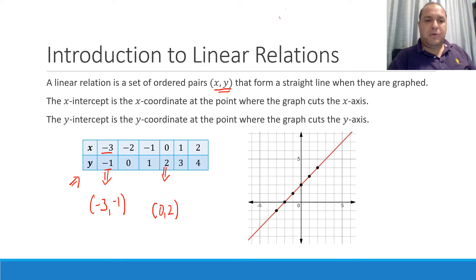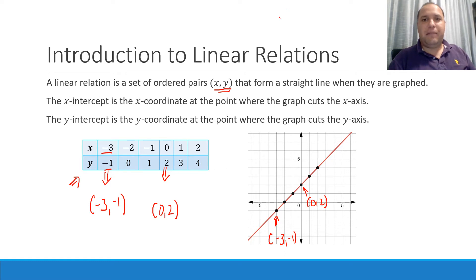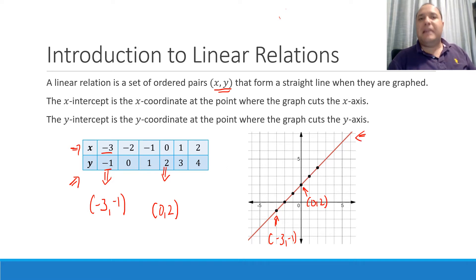When we plot these coordinates — like this one here which is negative 3, negative 1, and this one here which is 0, 2 — and we plot all of these points, they form a nice straight line. So this table and this graph represent a linear relation because when we plot those points, they form a straight line.